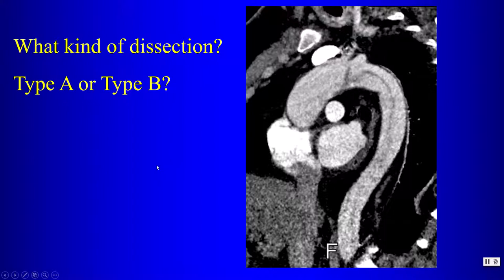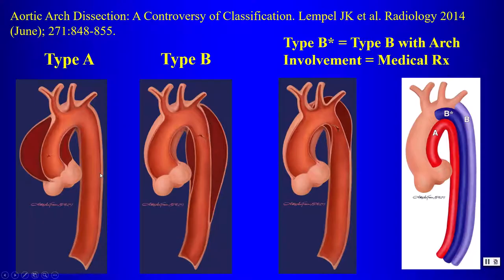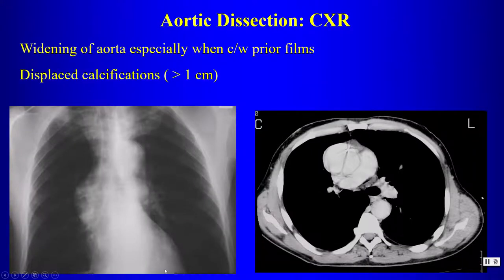A dissection involving the aortic arch but not the ascending aorta is considered a Type B dissection with arch involvement, treated medically. Any dissection extending to the ascending aorta is Type A. If the dissection extends to the aortic arch or begins within the arch without extending to the ascending aorta, it is Type B with arch involvement and is treated medically.